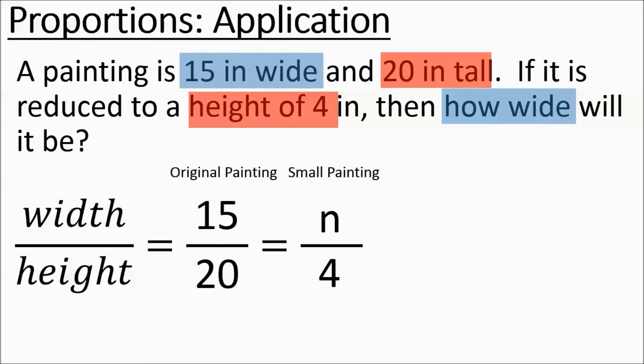Now what we're going to do is take our cross product rule and we're going to apply the cross product rule. We're going to do the 20 times n equals 60. I'm getting that 60 from multiplying the 15 times 4 and then the 20n is the 20 times n.